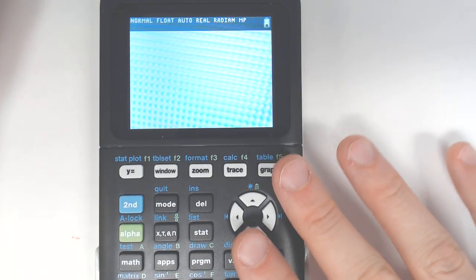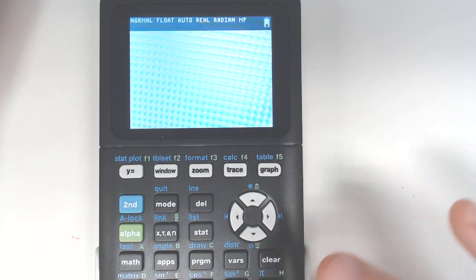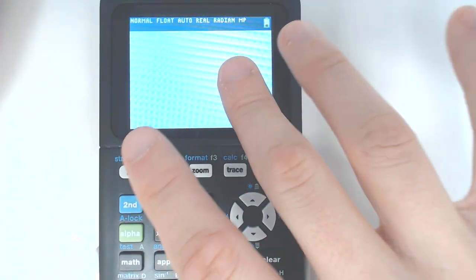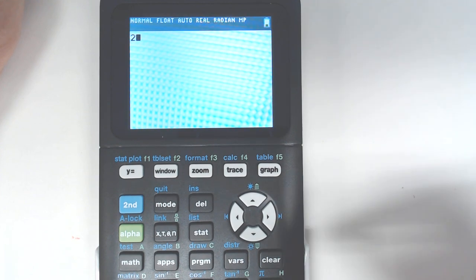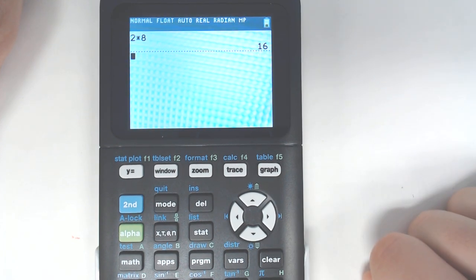If you've never used it before, first off, the graphing calculator has two main things. When you see a blank screen, you're not graphing. You're just doing normal things like 2 times 8, which is 16.